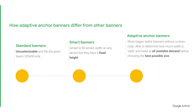Adaptive Anchor Banners have the same mission as smart banners — to show bigger, better banners without custom code for each device. However, they're able to do the job more effectively. Whereas smart banners never change height and aim to fill width, Adaptive Anchor Banners ask developers how much width is safe, and then choose the best possible banner size based on the device's width and height.